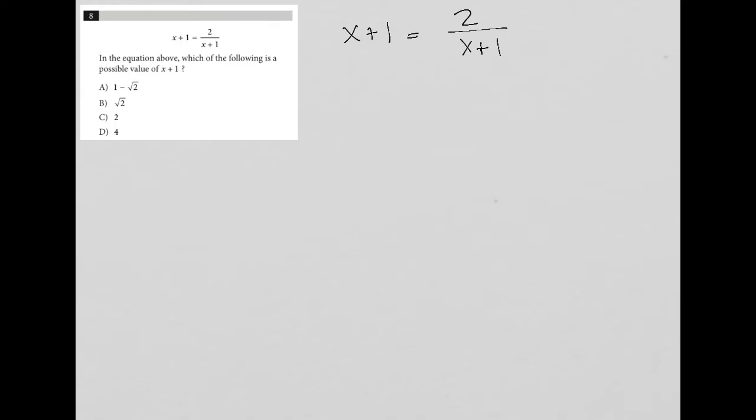In the equation above, which of the following is a possible value of x plus 1? So this is very important - a possible value of x plus 1. There's two ways to think about this, but really there's one best way to think about this.